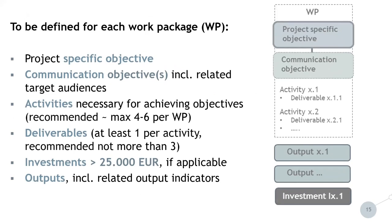At the level of each work package, it is necessary to define a project specific objective, the related communication objectives including related target audiences, and the activities necessary for achieving these objectives. We recommend a maximum of four to six activities per work package, though it can be more if needed by the complexity of the project. For deliverables, there should be at least one deliverable per activity, and we recommend no more than three deliverables in order not to be too fragmented. However, if necessary and justified by the long duration and complexity of the activity, it can be more than three.